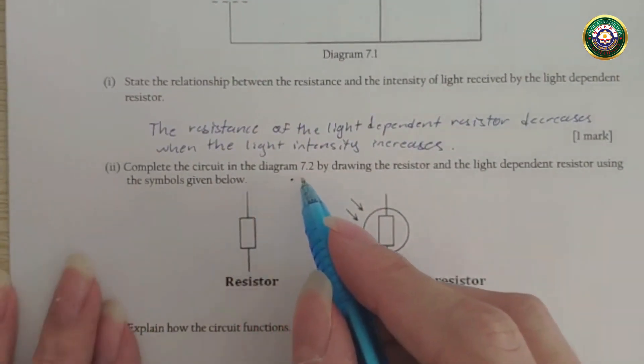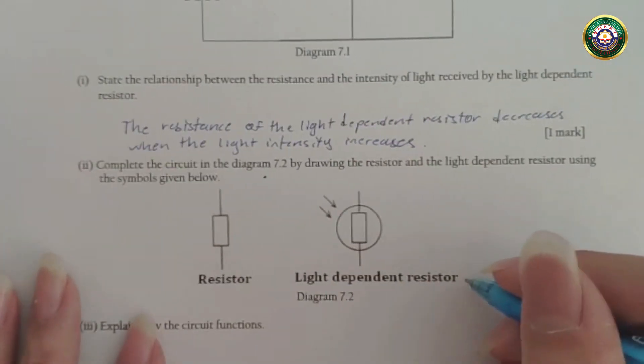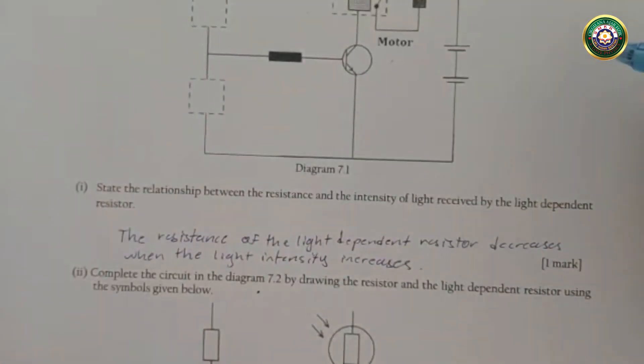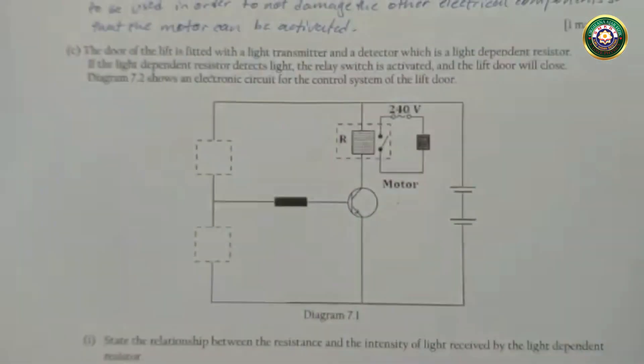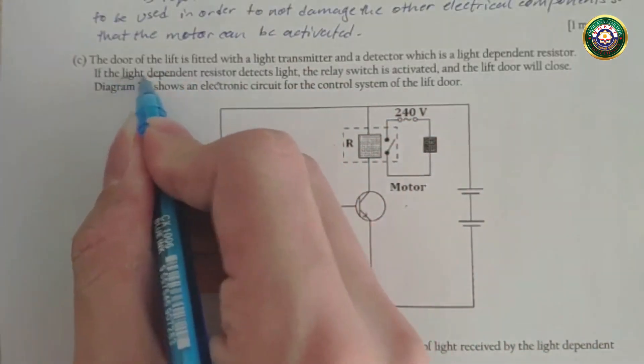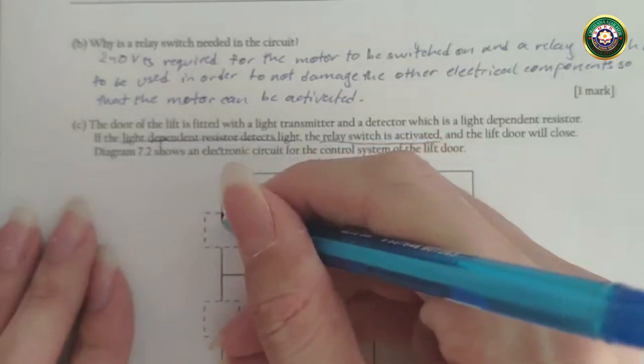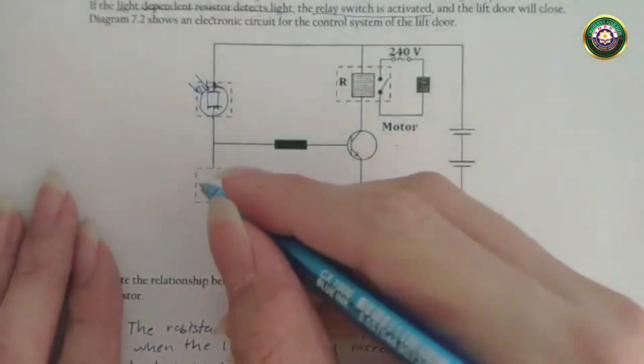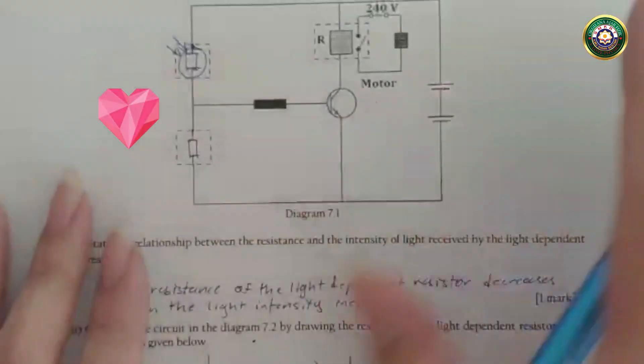Okay, onwards to the next question. Complete the circuit in diagram by drawing the resistor and the light-dependent resistor using the symbols given below. So first we have a resistor, and second one we have the light-dependent resistor, short form LDR. Okay, so they said they want this to switch on when the light-dependent resistor detects light. The relay switch is activated. Okay, in other words, you're going to have to put your LDR at the top portion here. Let me just draw that. And you have to put your resistor right here. Now, why did I do this? Well, that's going to be explained in the next question.